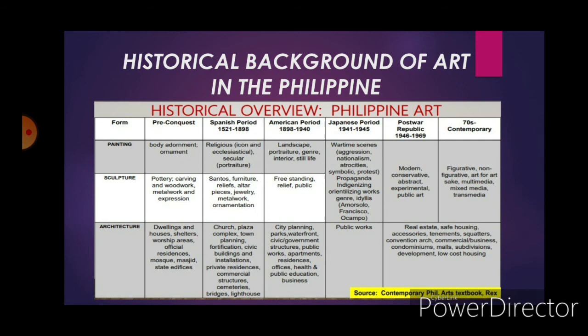This is now the historical background of art in the Philippines. We have different forms: painting, sculpture, and architecture. For the pre-conquest or prehistoric period, for painting we have body adornment or ornament — these are tattoos. For tribes in the past, tattoos were very important because that was their belief, their culture, and their identity. For sculpture, we have pottery, carving and woodwork, metalwork and expression. For architecture, we have dwellings and houses, shelters, worship areas, official residences, mosques, masjid, and state edifices.